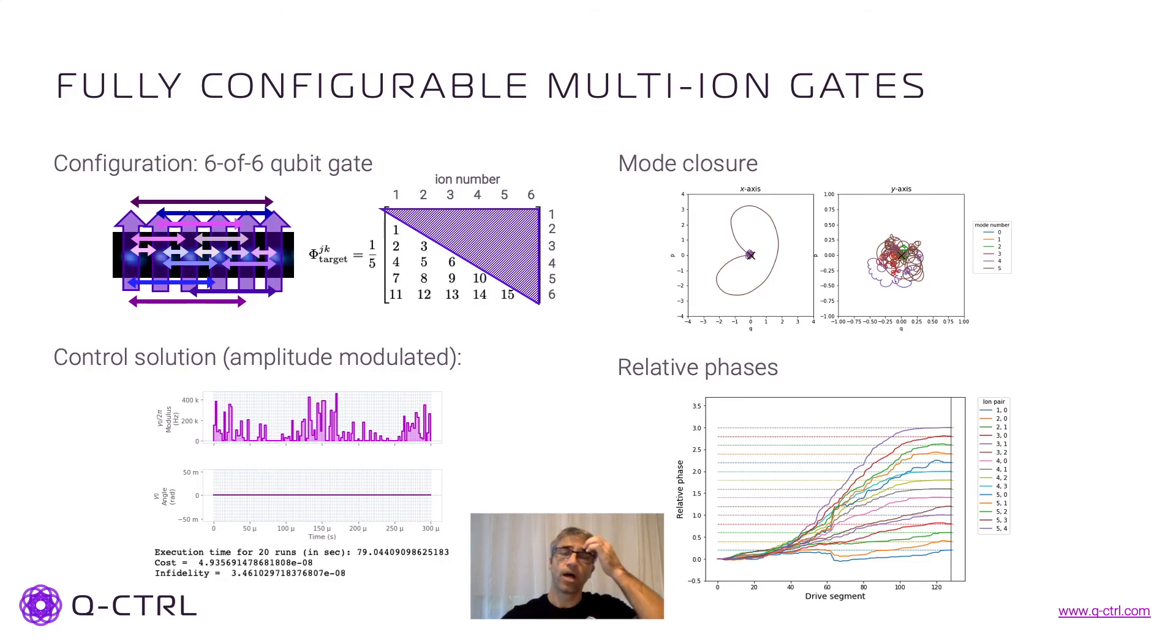So finally, to show another example of configurability of these gates, I have six ions and I'm connecting every single pair of them, but not only connecting them equally, I'm connecting them with different factors. And this is represented by the different colors here in these arrows and by the different numbers in this matrix for our phase.